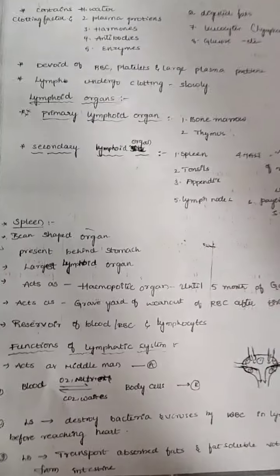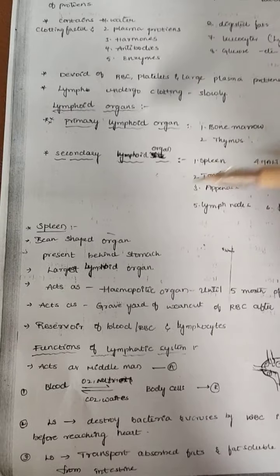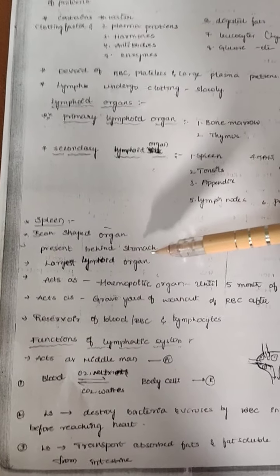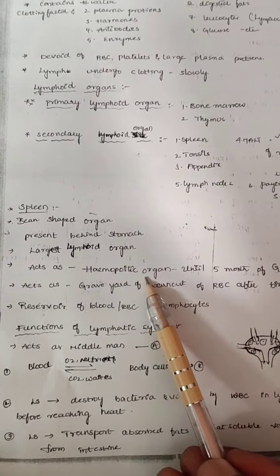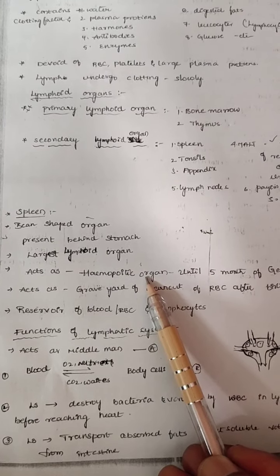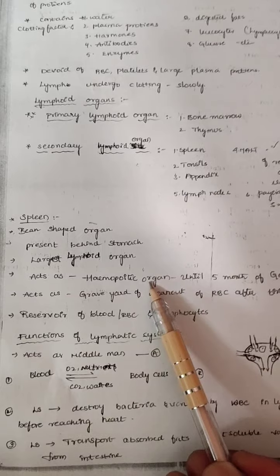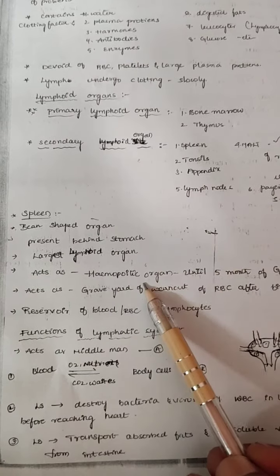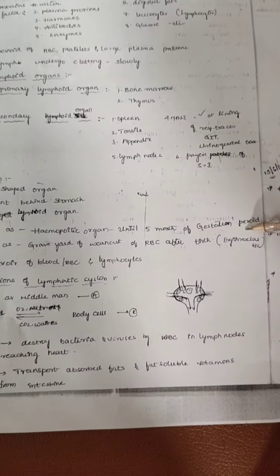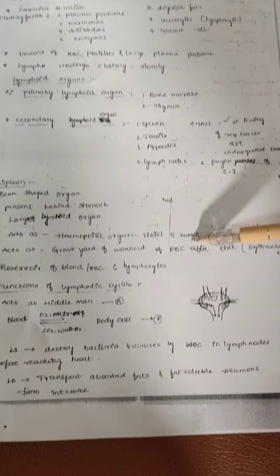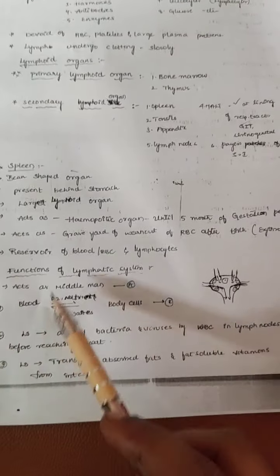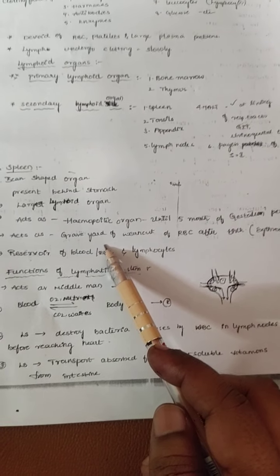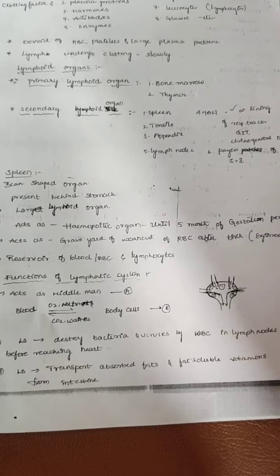The main secondary lymphoid organ is the spleen. The spleen is approximately bean-shaped, present behind the stomach, and it is the largest lymphoid organ. It also acts as a hemopoietic organ, where blood is formed. During the gestation period, in the first five months out of nine, blood production takes place in the spleen region. At adult condition, the spleen also acts as a graveyard of RBCs.